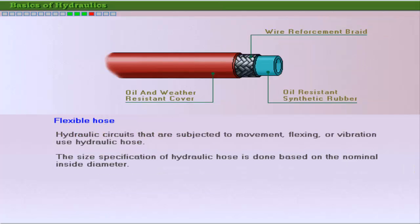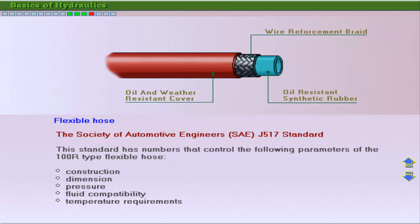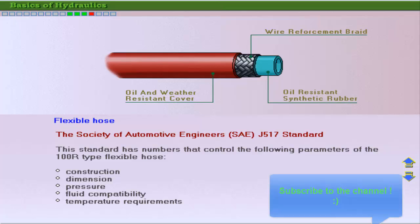Hose is used when hydraulic circuits are subjected to movement, flexing, or vibration. Hydraulic hose sizes are usually designated by their nominal inside diameter. With some exceptions, this is indicated by a dash number representing the number of sixteenth-inch increments in their inside diameter. The SAE J517 standard is a guideline that helps select a hose for specific performance requirements, and an example of size specification for hose is discussed here.